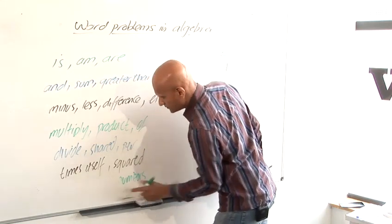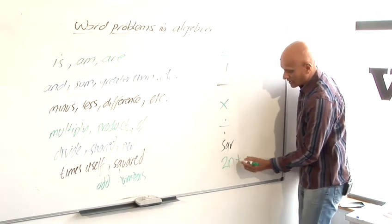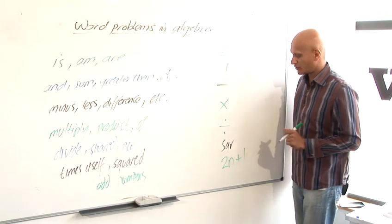And if we wanted an odd number, we would call it 2n plus 1. Make it even, add 1, that will ensure it's odd.